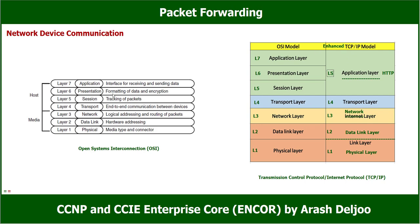Now let me review the functions of each layer in the OSI model and the enhanced TCP/IP model. We will learn more detail about these in this class beyond what was covered in CCNA. The layer seven, or application layer in the OSI model, is the interface for receiving and sending data.